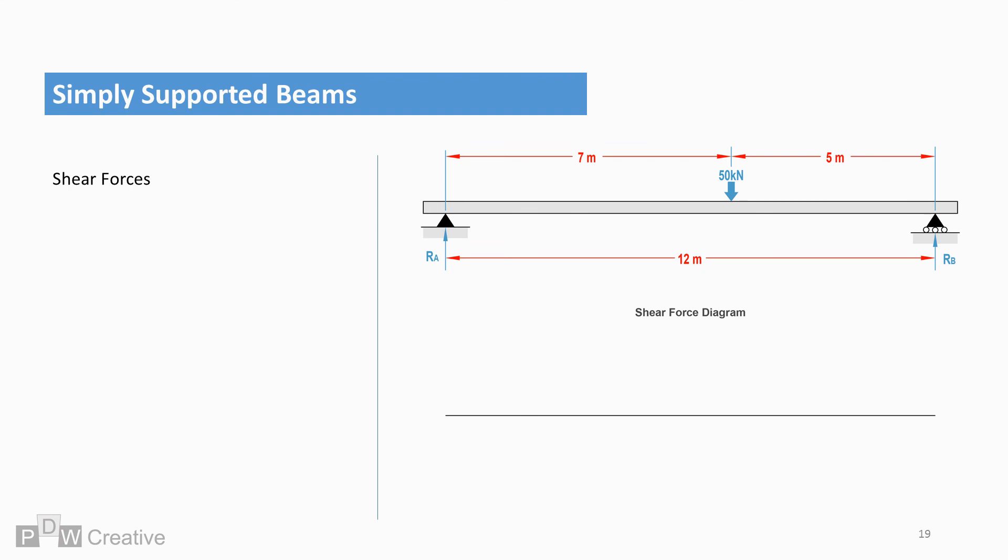The shear force diagram shows the effect of the vertical forces on the beam. It plots slightly differently from the bending moment diagram. Again, we are going to work from left to right.